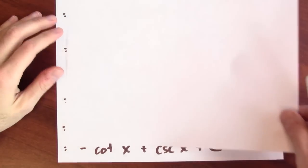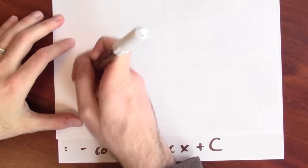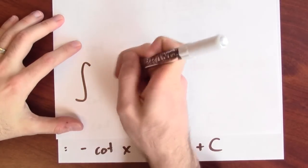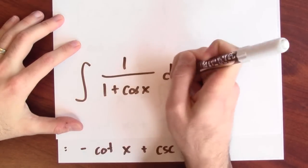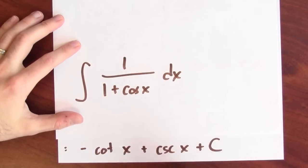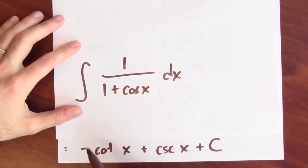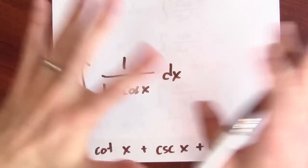Putting it all together: the anti-derivative of 1 over 1 plus cosine x dx is negative cotangent x plus cosecant x plus some constant. I hope you're getting the idea that there are some really clever things you can try to make these substitutions work.